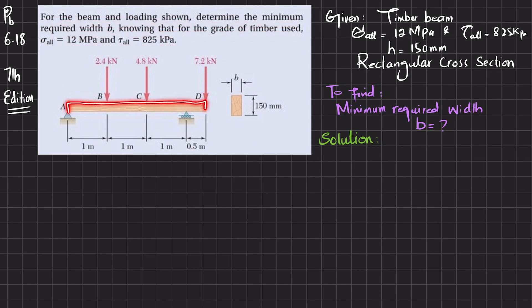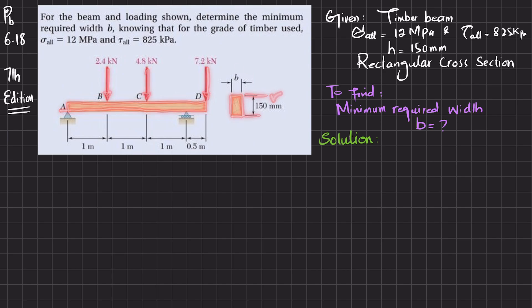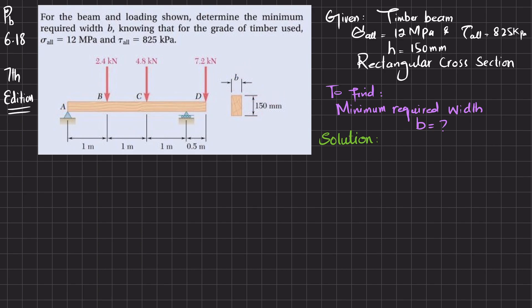This is an overhanging beam with loading shown at points B, C, and D. The cross-section of this beam is rectangular with a height of 150 mm. We have to find the width b, so let's start with the solution.